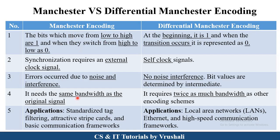Manchester encoding needs the same bandwidth as the original signals, but Differential Manchester encoding requires more bandwidth — twice the bandwidth — for encoding the signals. Manchester encoding is generally used for tag filtering purposes, in magnetic stripe cards, or in some basic communication frameworks. Differential Manchester encoding is used in local networks, Ethernet, or some high-speed communication frameworks. This is the basic difference between Manchester and Differential Manchester encoding.